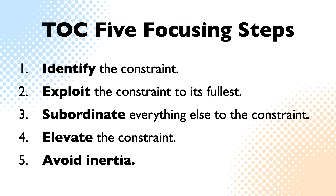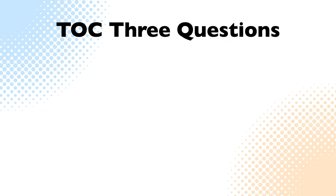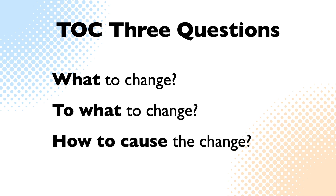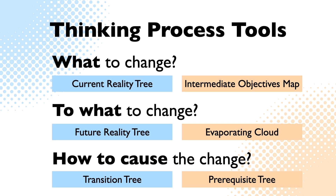Every improvement to a system is a change to how that system works. But to efficiently manage a system's constraint, these changes have to be carefully chosen. The developers of the Theory of Constraints realized that they needed a set of simple thinking tools to help organizations reason through three deceptively simple yet essential questions: What to change? To what to change? And how to cause the change? They did this by adapting the rational thinking processes used in the scientific method and developing a set of thinking process tools designed to answer these very questions.